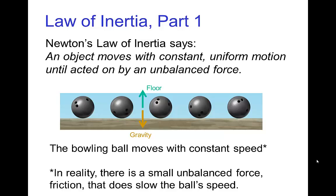So in this case, there's no unbalanced force, and so we have constant uniform motion — the speed of the bowling ball is constant, it moves in a straight line. This is a bit of an approximation because there's going to be a little bit of friction that's going to slow the motion, but pretty much Newton's Law of Inertia applies here.